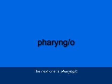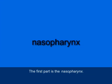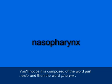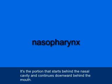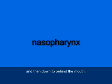The next word part is pharyngo — P-H-A-R-Y-N-G slash O. Pharyngo refers to the pharynx, which is the medical term for what we commonly know as the throat. The throat can be divided into three subparts. The first is the nasopharynx — N-A-S-O-P-H-A-R-Y-N-X — composed of the word parts naso (N-A-S slash O) and pharynx. It's the portion that starts behind the nasal cavity and continues downward behind the mouth, making it the uppermost part of the throat.